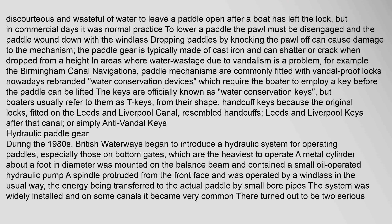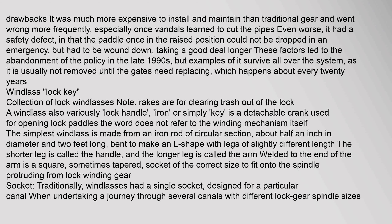During the 1980s, British Waterways began to introduce a hydraulic system for operating paddles, especially those on bottom gates which are the heaviest to operate. A metal cylinder about a foot in diameter was mounted on the balance beam, containing a small oil-operated hydraulic pump; a spindle was operated by a windlass in the usual way, with energy transferred to the paddle by small bore pipes. There turned out to be two serious drawbacks: it was much more expensive to install and maintain than traditional gear, and had a safety defect — the paddle in the raised position could not be dropped in an emergency but had to be wound down. These factors led to the abandonment of the policy in the late 1990s.